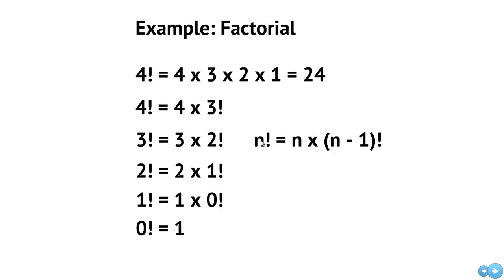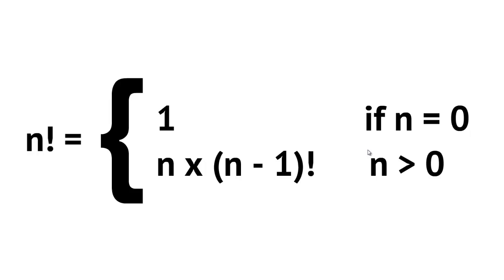This is really the recursive part, and mathematicians actually define factorial this way — it's the formal definition. If n equals 0, then n factorial is 1. If n is greater than 0, then n factorial is n times (n−1) factorial. This defines our base case and our recursive case, which we'll now implement as a recursive function in C++.